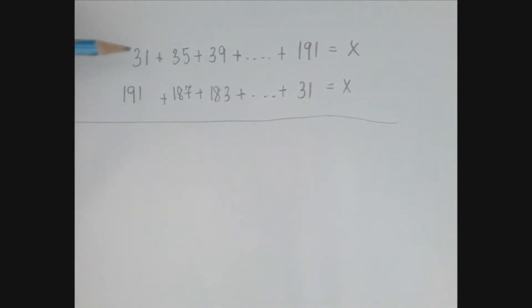But we're going to proceed to add the columns. When we add 31 and 191, we get 222. And if we played our cards right, then all the columns should add up to the same number, because as we step to the right, the number in the first row increases by four, and the number in the second row decreases by four, therefore the sum remains the same.